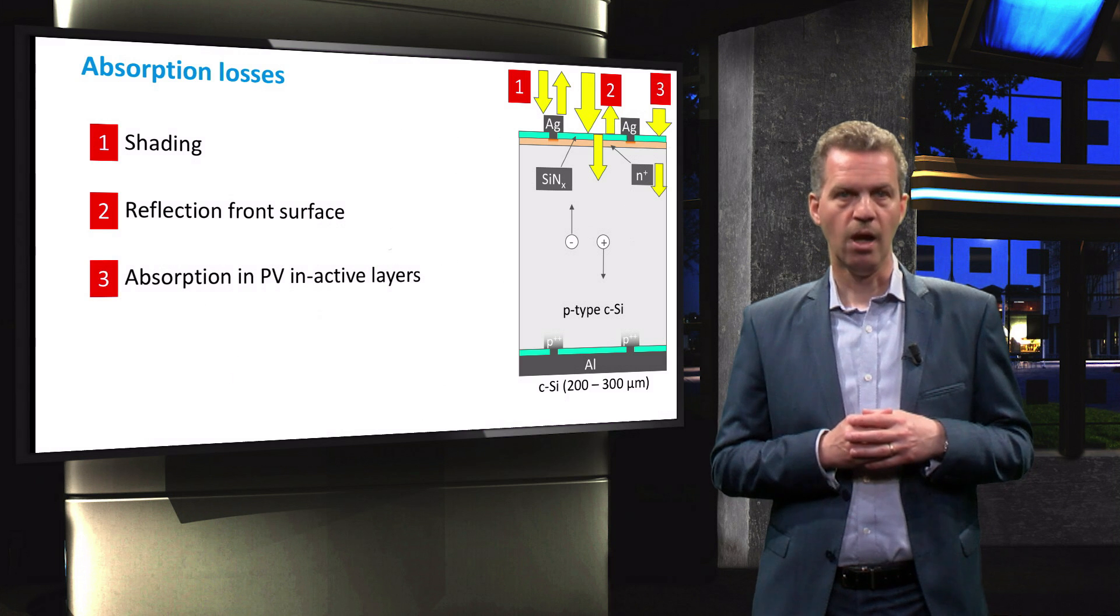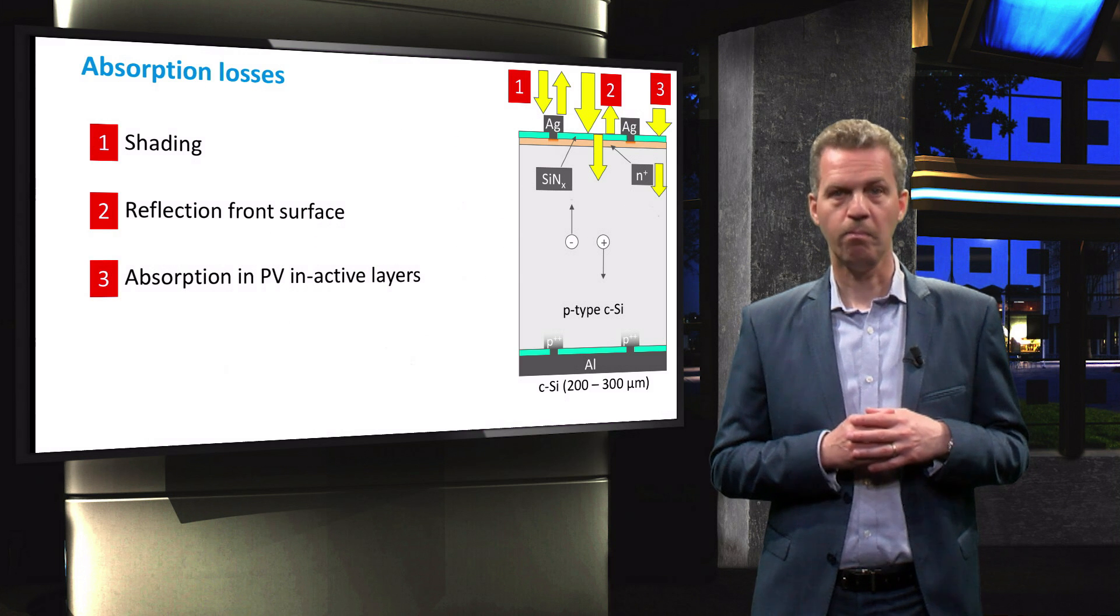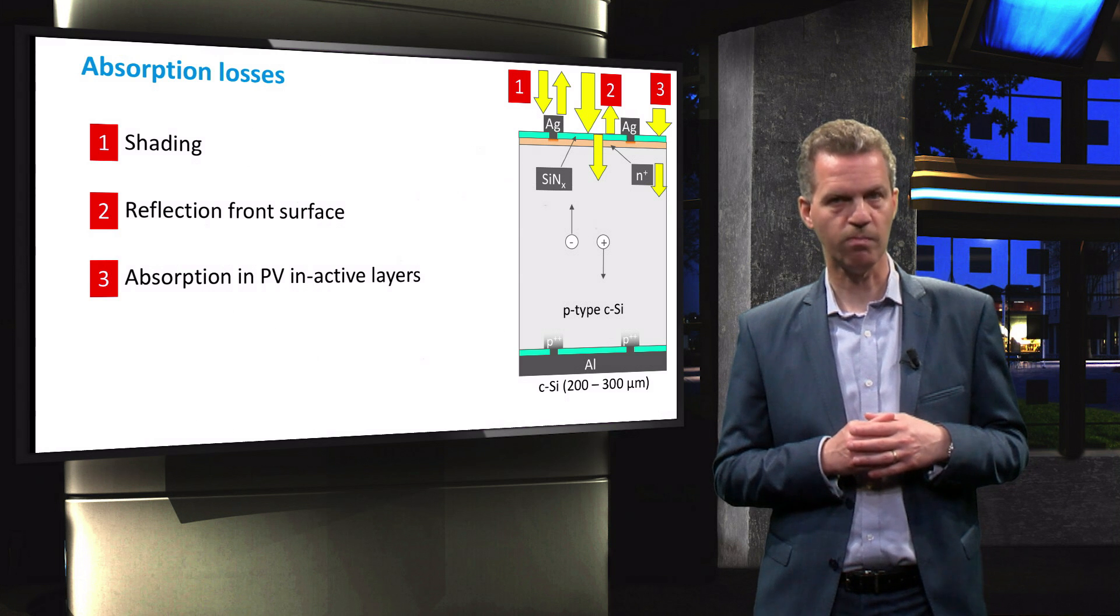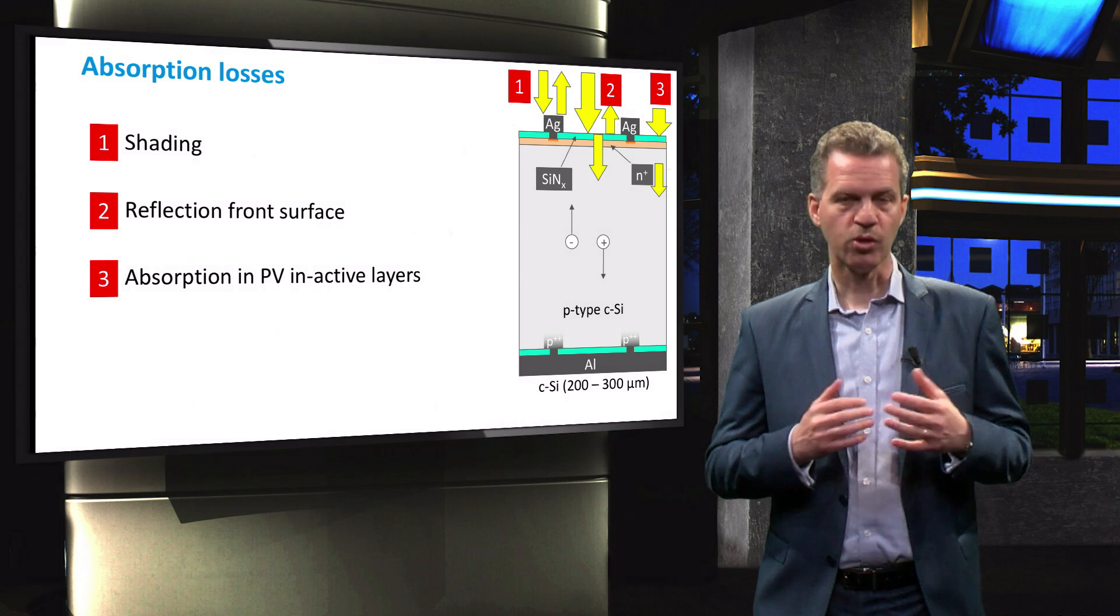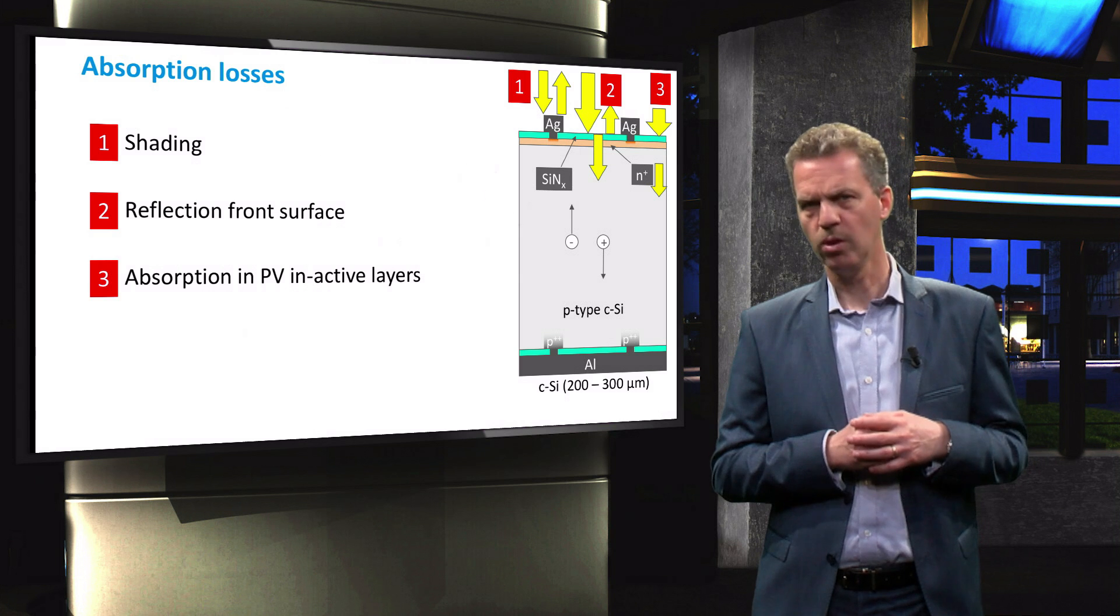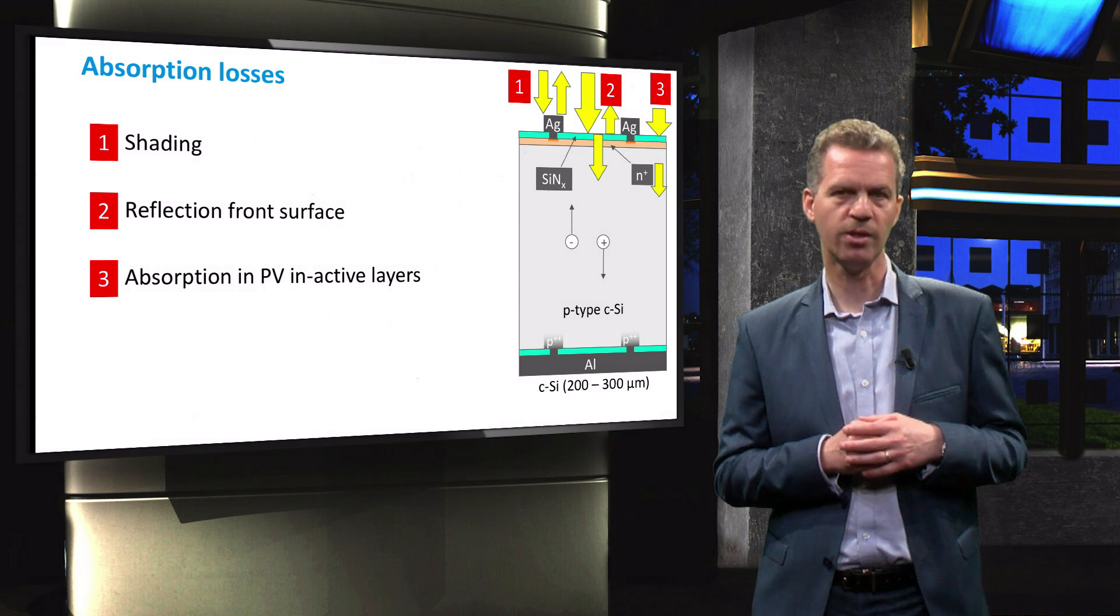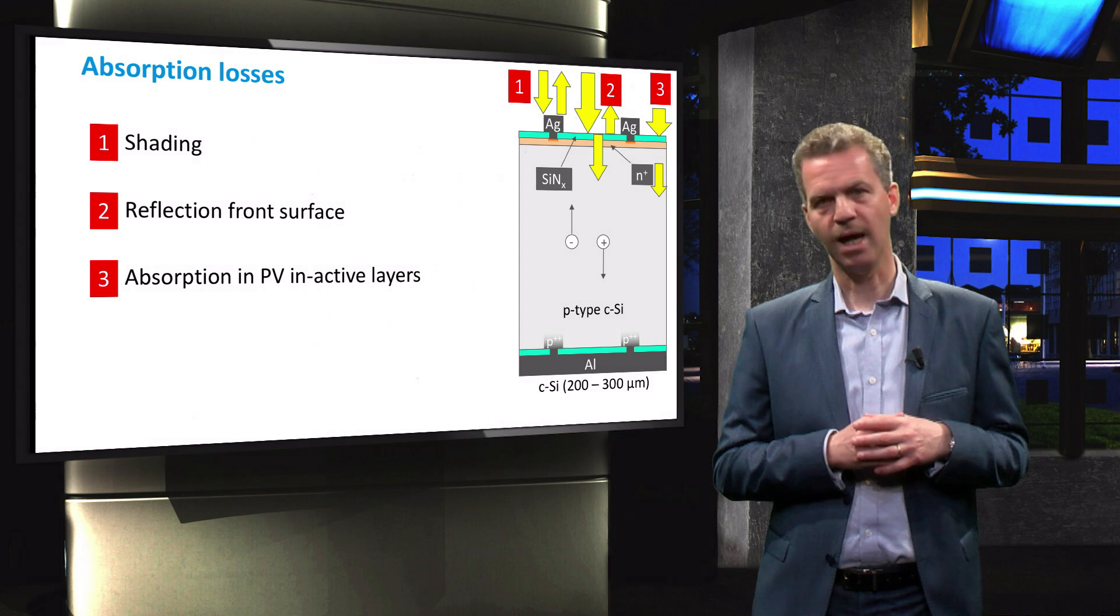Thirdly, light can be absorbed in PV inactive layers such as the silicon nitride front surface passivation layer. Absorption of light in these layers will not contribute to the generation of free charge carriers in the semiconductor and can thus be counted as a loss.